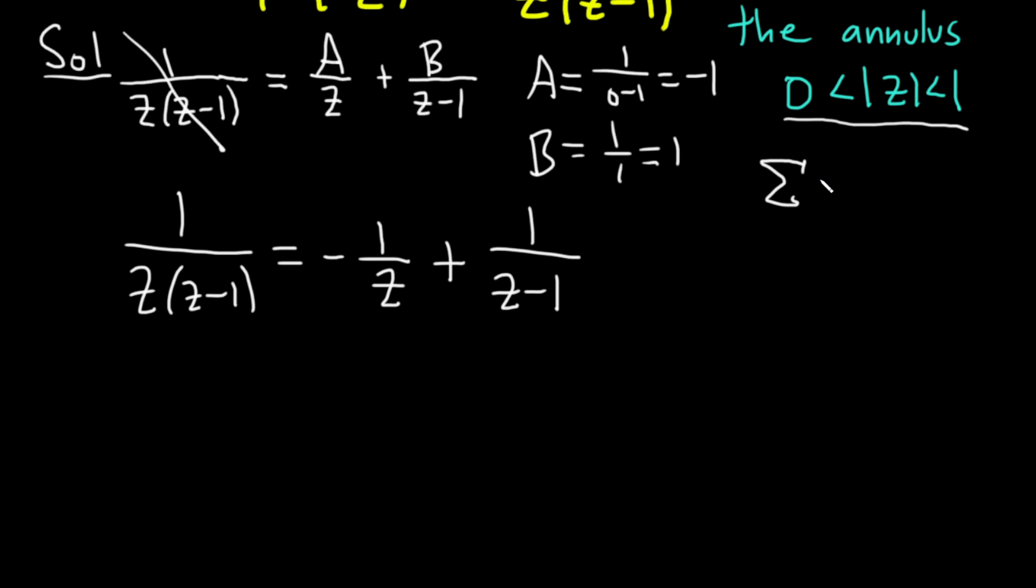If you have the sum, I'll just use x to the n, as n runs from 0 to infinity, this is going to be 1 over 1 minus x. And that's going to be true if x is less than 1, bigger than 0. And x here can be a real number or a complex number. So we're going to use this formula.